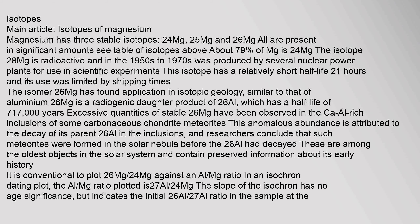Magnesium has three stable isotopes: ²⁴Mg, ²⁵Mg, and ²⁶Mg. All are present in significant amounts; about 79% of Mg is ²⁴Mg. The isotope ²⁸Mg is radioactive and in the 1950s to 1970s was produced by several nuclear power plants for use in scientific experiments. This isotope has a relatively short half-life of 21 hours and its use was limited by shipping times. The isomer ²⁶Mg has found application in isotopic geology, similar to that of aluminium-26 as a radiogenic daughter product of ²⁶Al, which has a half-life of 717,000 years. Excessive quantities of stable ²⁶Mg have been observed in the calcium-aluminium-rich inclusions of some carbonaceous chondrite meteorites, attributed to the decay of its parent ²⁶Al.